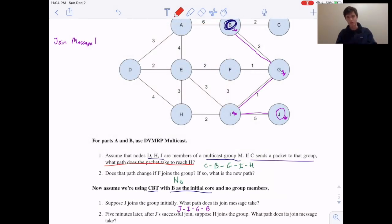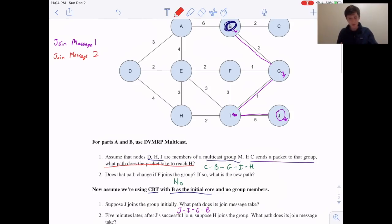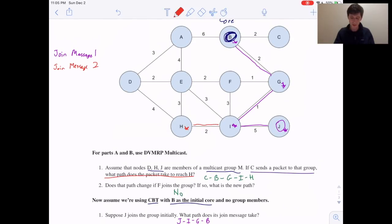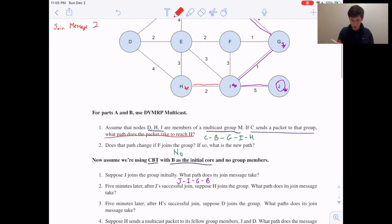Now, five minutes later, H wants to join the group. So join message two. H wants to join. Well, H is going to send a packet to B. But now, H sends this packet and I is already part of the tree. So as we said before, there's no point in sending this join message further along to B because all of these links and nodes on the way to B are already part of the tree because I is, because someone else joined before. So this join message stops at I. We only get the message sent from H to I.